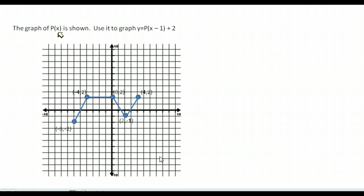What changes are going to be made to the graph? The plus 2 on the end means we're going to shift it up 2. The minus 1 inside of the parentheses — remember, anything inside is opposite of what we would think — minus is actually going to move it to the right 1. So we're going to take every single one of these points and move them 1 to the right and up 2.